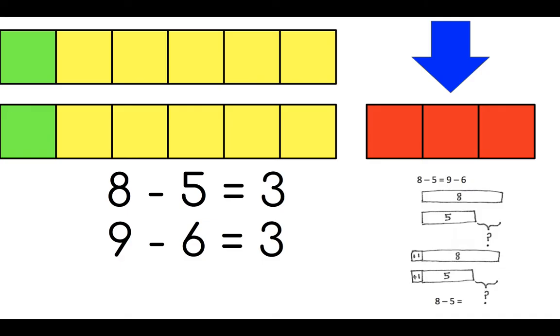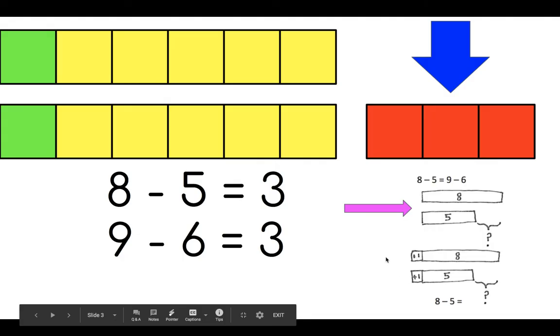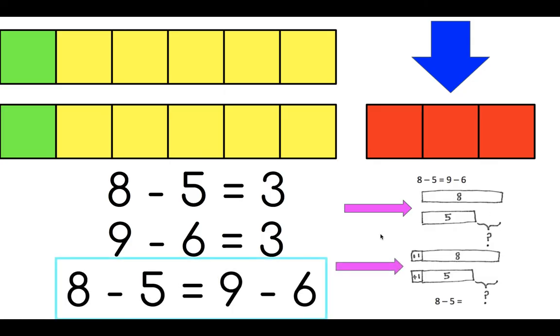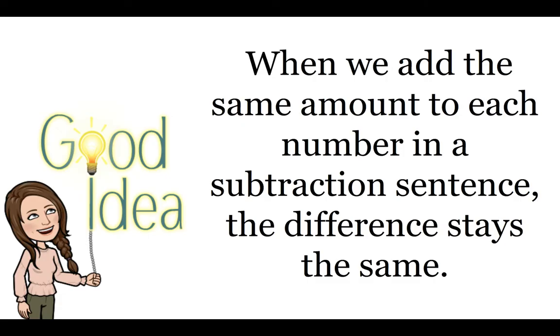Let's take a look at this using tape diagrams. Here at the top, we have a tape diagram drawn to show 8 and 5. Remember, we were trying to find the difference between 8 and 5 and realized it was 3. I added one green linking cube to the end of each of our linking cube sticks. Here on our tape diagram, I've added 1 to both 8 and 1 to 5. While it did change the total number of linking cubes, it did not change the difference. 8 subtract 5 equals 9 subtract 6. They're equal or equivalent, and the difference does not change. When we add the same amount to each number in a subtraction sentence, the difference stays the same. That's an amazing thought.